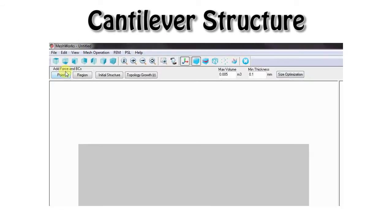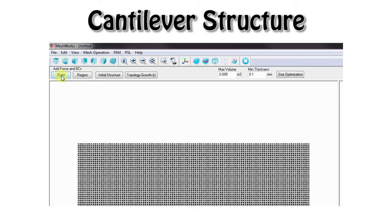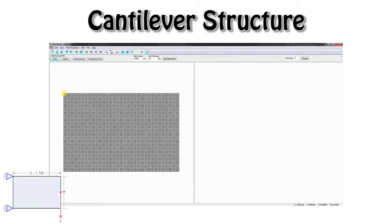First, we test for the cantilever structure, which has two fixed point supports on the left and one force applied on the right. We use the point selection tool in the design platform to add the supports and the applied force.